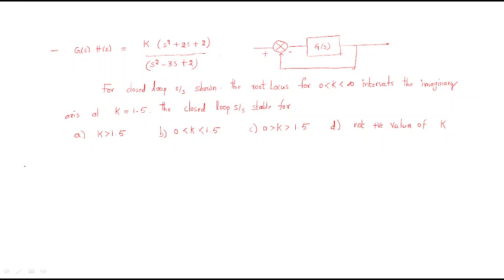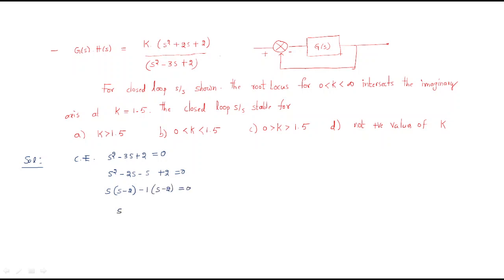For any system, we analyze stability using the poles only. The characteristic equation from the denominator is s² - 3s + 2 = 0. Factoring: s(s - 2) - 1(s - 2) = 0, giving (s - 2)(s - 1) = 0. So the two poles are at s = 2 and s = 1.